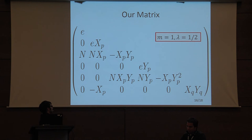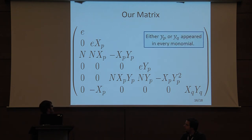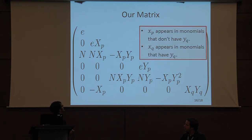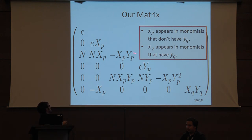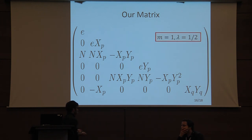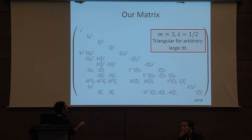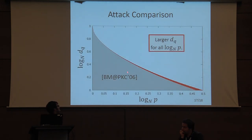Lambda denotes the ratio of which polynomials to use — fp versus fq — where the ratio depends on the sizes of p and q. The algebraic structure of fq enables us to construct a triangular matrix without useless polynomials. What we proved is that we use xp only when monomials don't have y_q, and xq only when monomials have y_q. By this restriction, we can construct a triangular matrix not only for m=1 and λ=1/2, but for larger m and arbitrary lambda, thus obtaining the improvement.